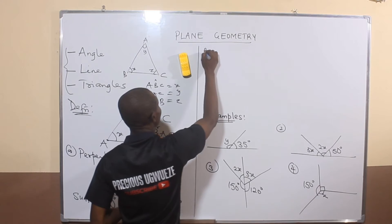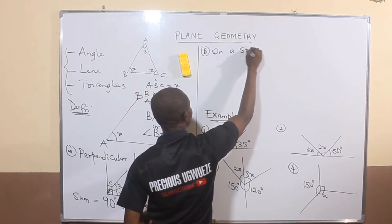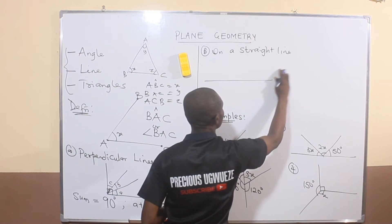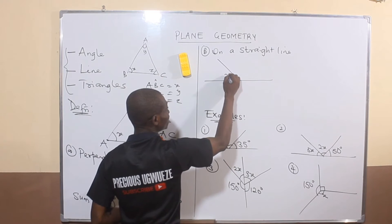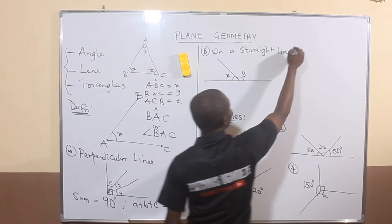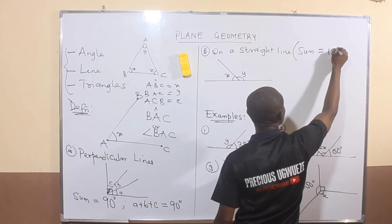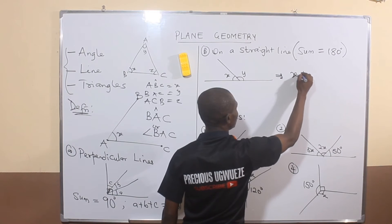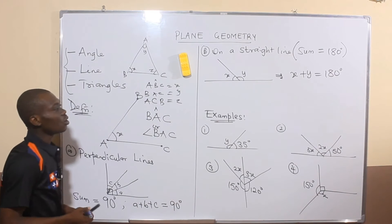The second case is angles formed on a straight line. If angles are formed on a straight line — say angle x and angle y — the rule states that the sum of angles on a straight line is always equal to 180 degrees. So x plus y equals 180 degrees.